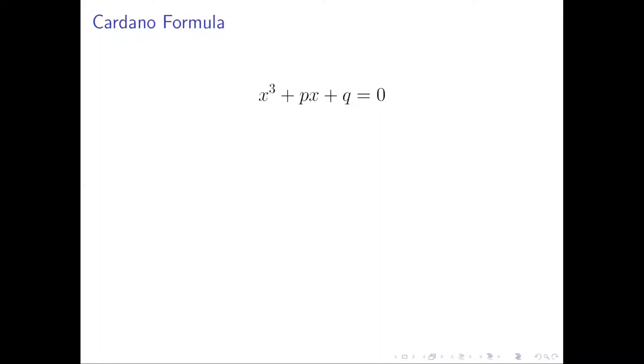Consider equation x cubed plus px plus q equals zero with constant coefficients p and q. We are going to use the following strategy to solve the equation. First, we assume x equals u plus v, converting one variable into two variables u and v.